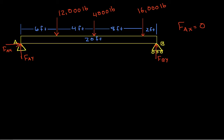Next we'll find F_BY by summing the moments about A and setting them equal to zero. I have this 12,000 pound force acting with a moment arm of six feet, and this is negative because it's inducing a clockwise rotation. Then I have a 4,000 pound force acting with a moment arm of 10 feet.